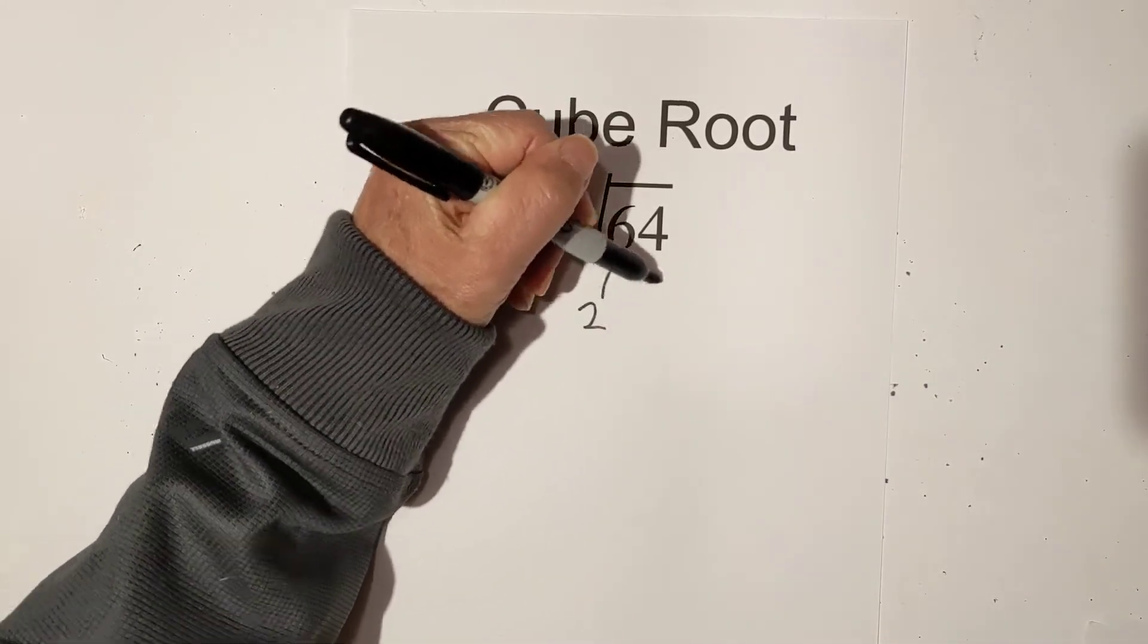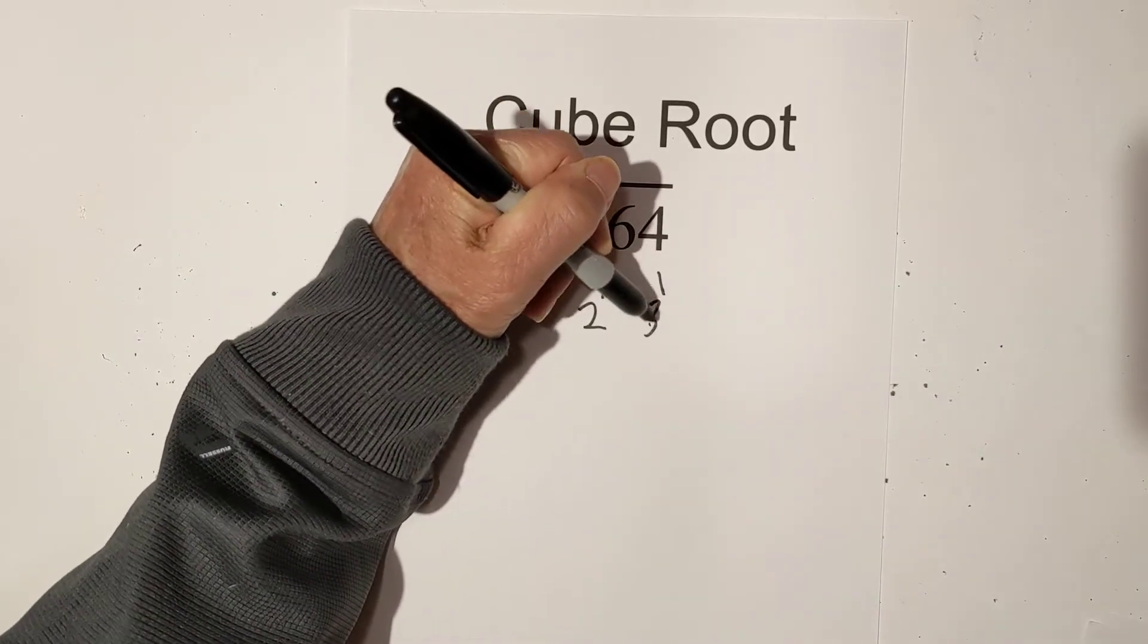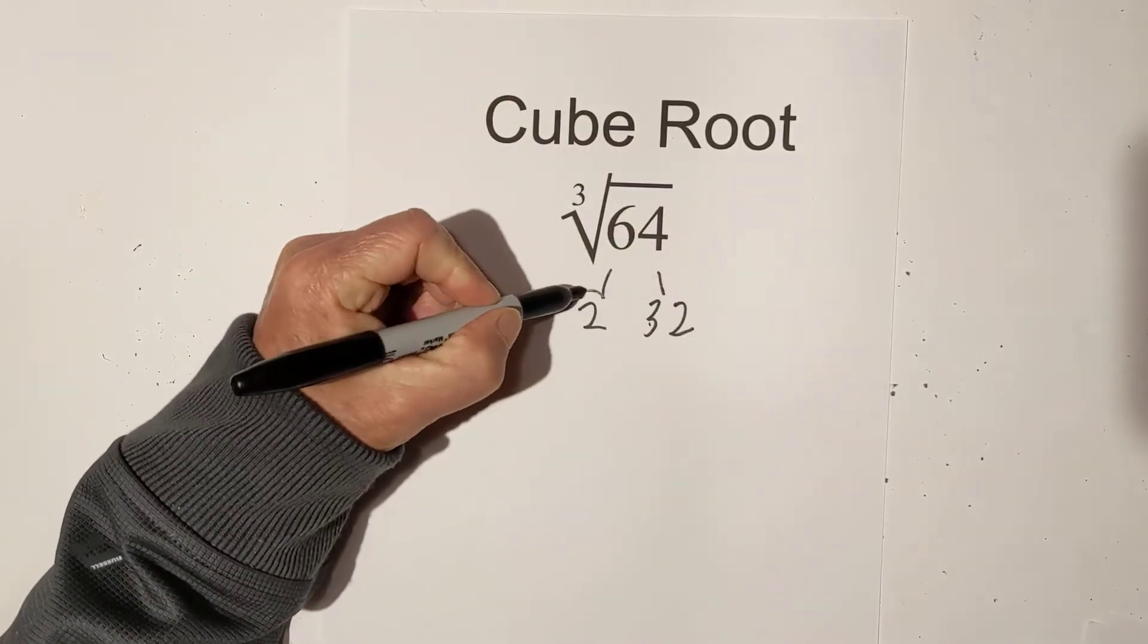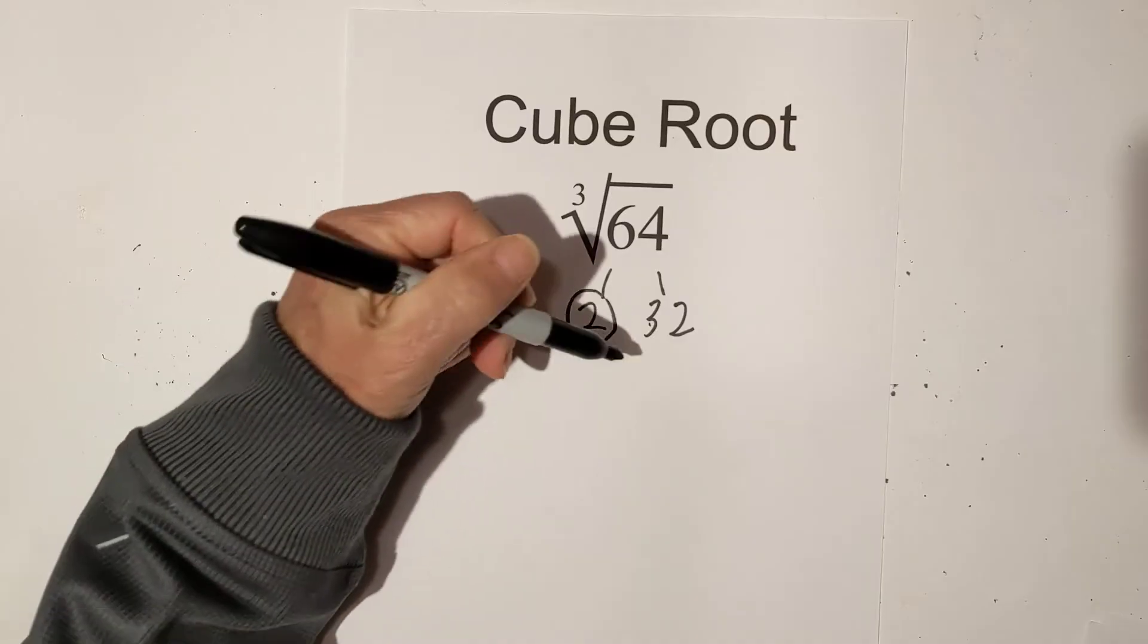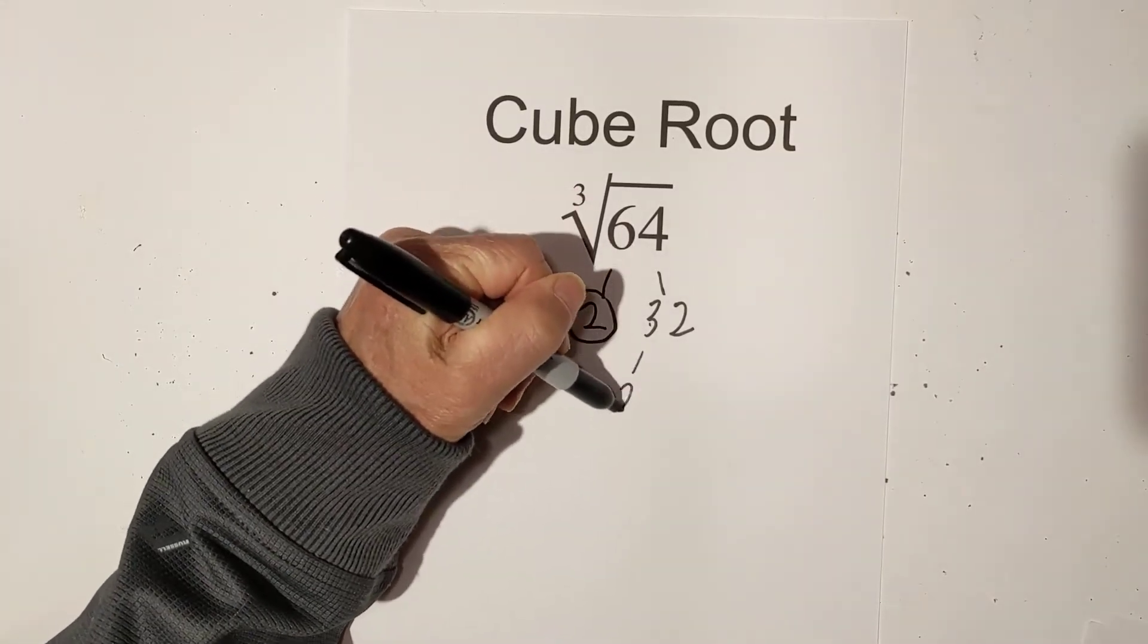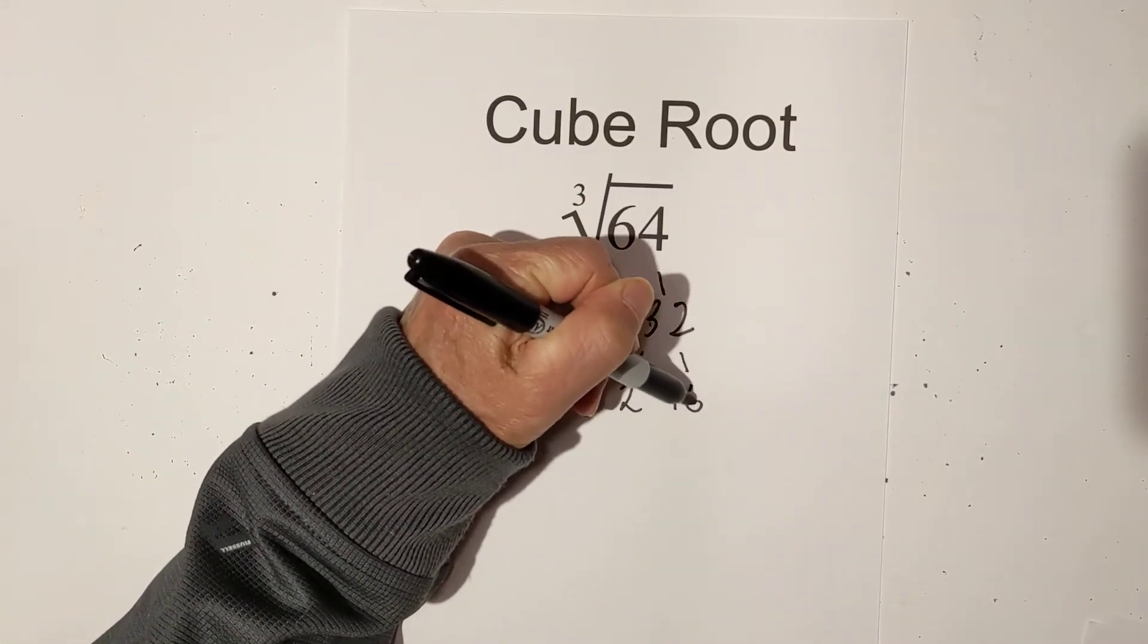First, 2 times 32 equals 64. Circle the 2 because it is prime. And now 2 times 16.